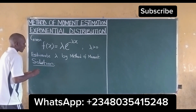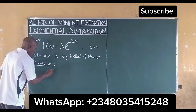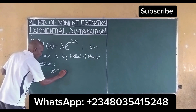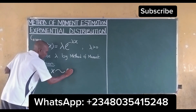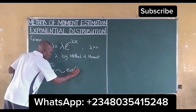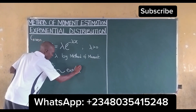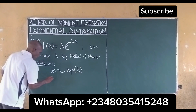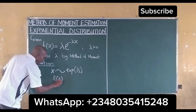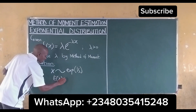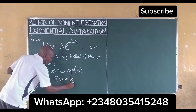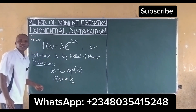We should note that if X follows an exponential distribution with parameter 1 over lambda, it then means that the expected value of X for an exponential distribution is equal to 1 over lambda.